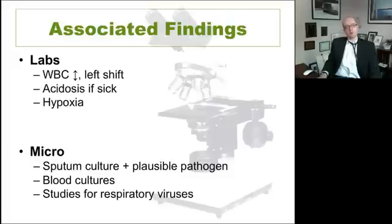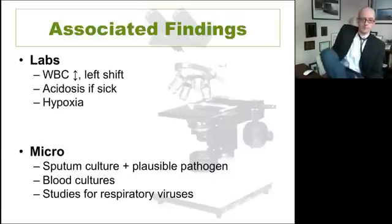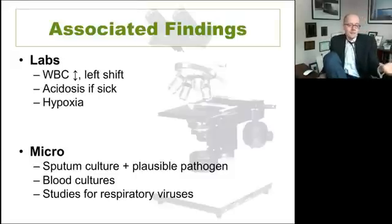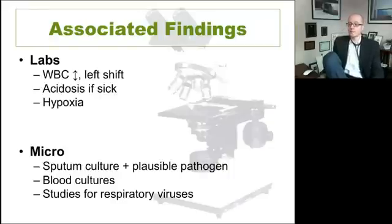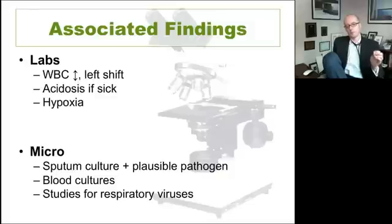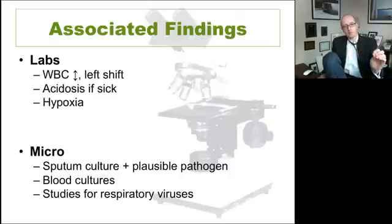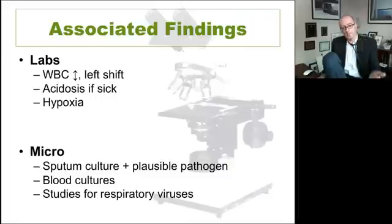What else might signal pneumonia? An elevated white count suggestive of inflammation might indicate pneumonia. Acidosis can suggest sepsis and shock with poor tissue perfusion. Hypoxia could be a clue. Microbiology is only useful if super clearly positive — sputum culture with material from your non-sterile mouth, not so helpful, but if it's clearly showing a pathogen like strep pneumo that can be helpful. Blood cultures being positive nails that there's an infection going on, and occasionally you could do a nasal swab for influenza or other viruses.